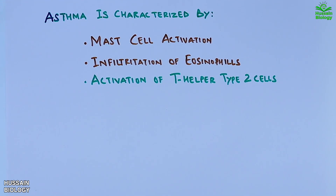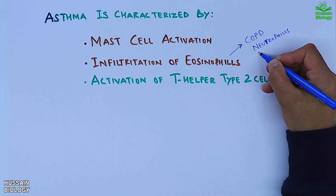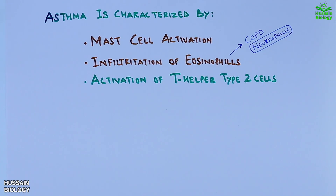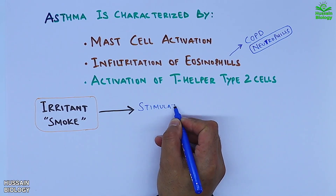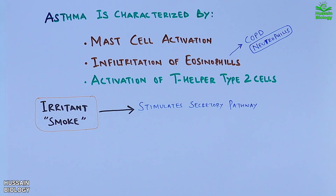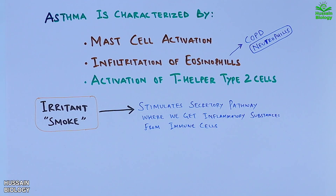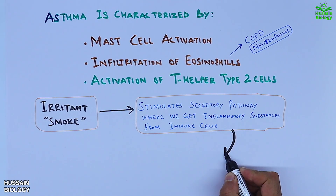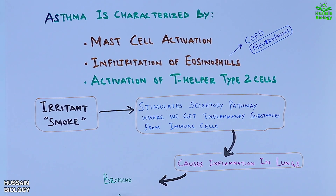Remember, in COPD — chronic bronchitis and emphysema — neutrophils are involved rather than eosinophils. Asthma can be triggered by an irritant like smoke, which stimulates the secretory pathway, producing inflammatory substances from immune cells. These inflammatory substances cause inflammation in the lungs, leading to bronchoconstriction.